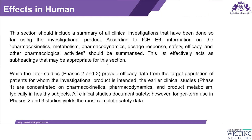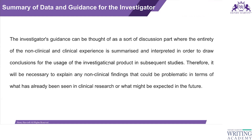The Effects in Humans section must include information related to pharmacokinetics, metabolism, pharmacodynamics, dose-response, safety, efficacy, and other pharmacological activities. Phase 2 and Phase 3 provide efficacy data from target patient populations, while Phase 1 provides pharmacokinetics, pharmacodynamics, and metabolite formation information in healthy subjects, as well as bioavailability data, use in subgroups by age or gender, impaired organ function, and drug-drug and drug-food interactions.